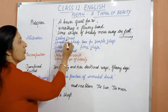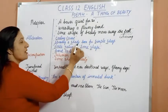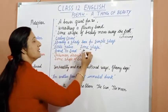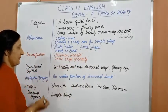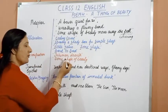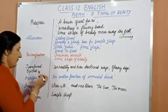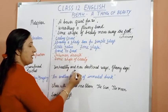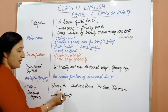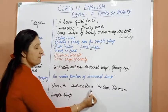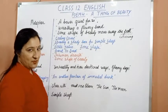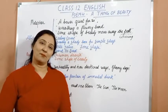Alliteration is used in 'cooling covert' (C sound repeated), 'sprouting a shady boon for simple sheep' (S sound), 'noble nature' (N sound), and 'some shape' and 'band to bind'. Personification is used in 'inhuman dearth' and 'some shape of beauty'. Transferred epithet appears in 'unhealthy and over-darkened ways' and 'gloomy days'. Imagery is used in 'clear rills', 'musk rose blooms', and 'the sun and the moon'. There is also a biblical reference in 'simple sheep'.